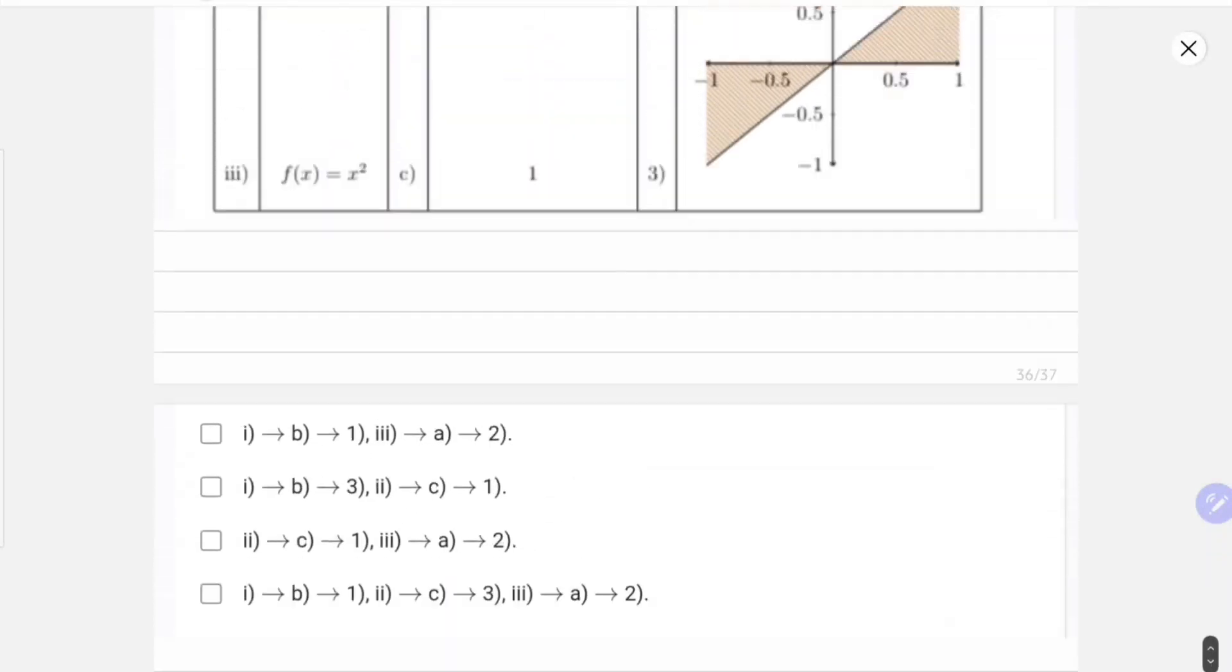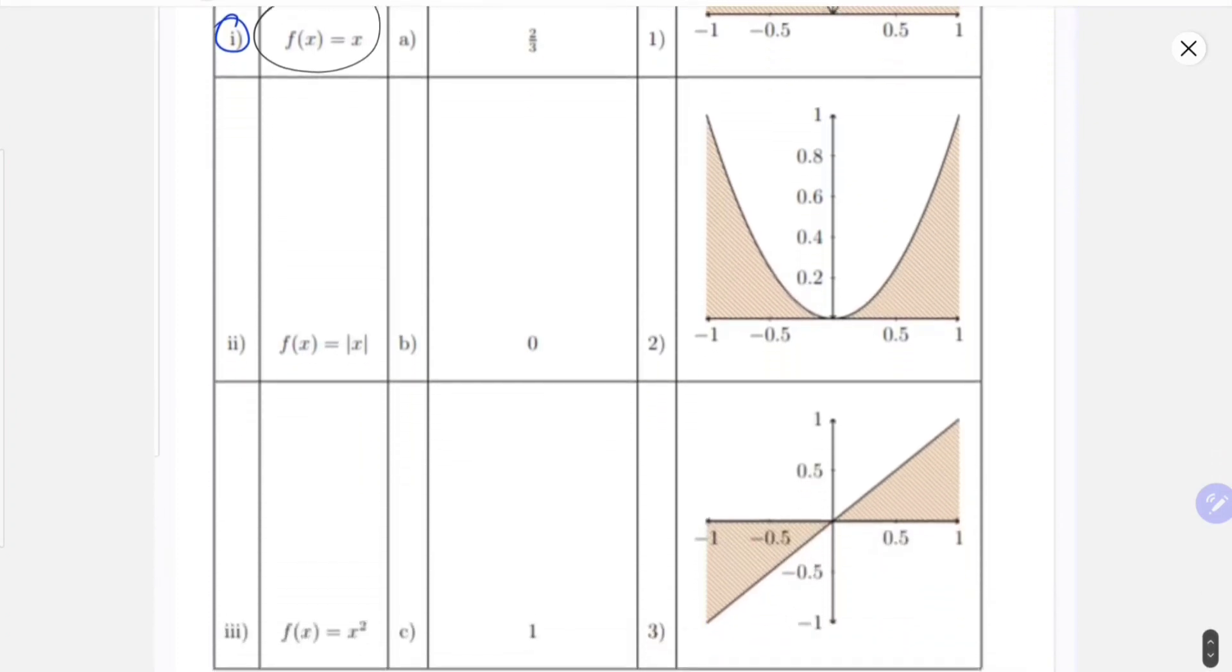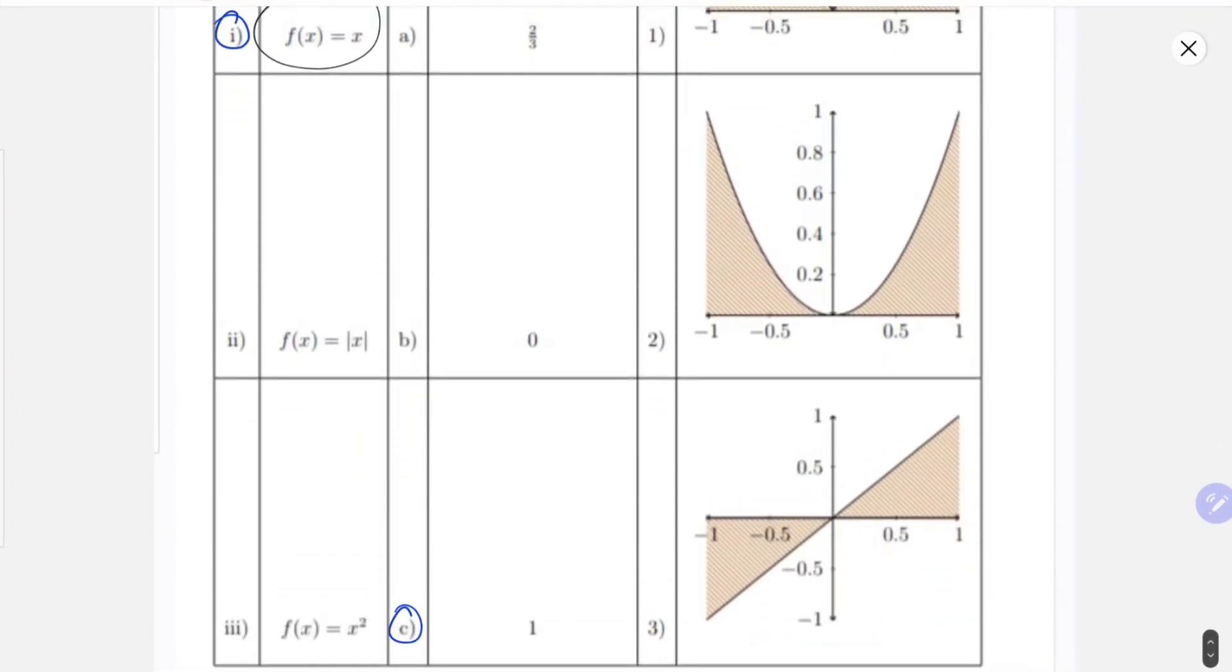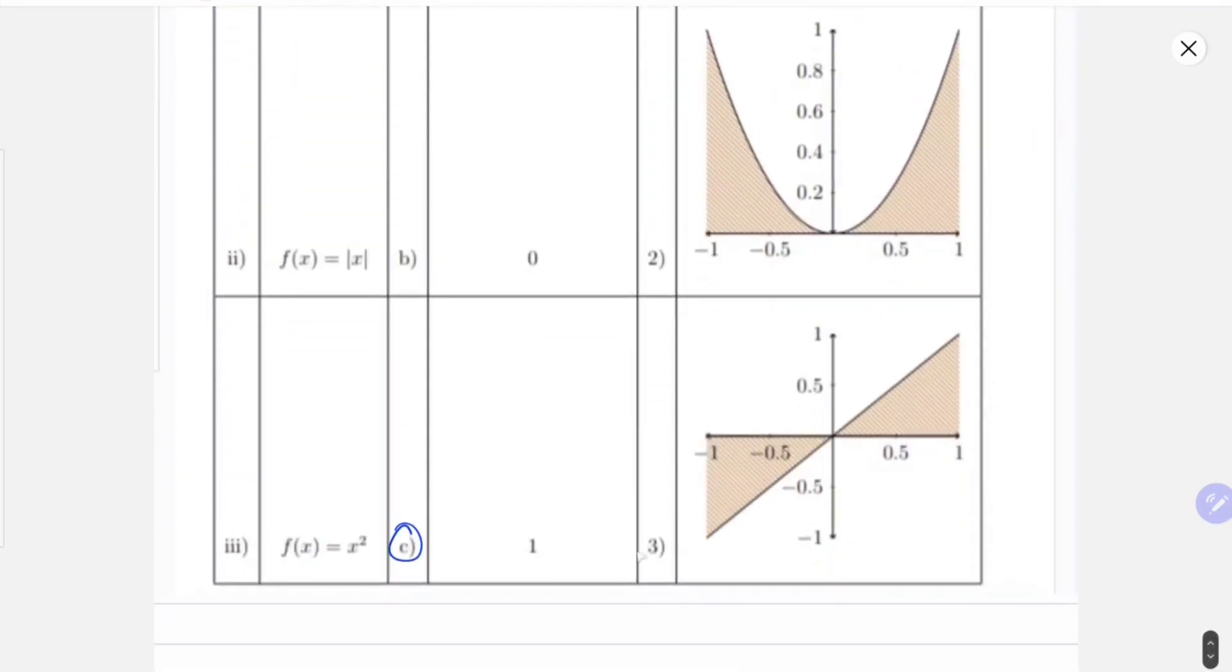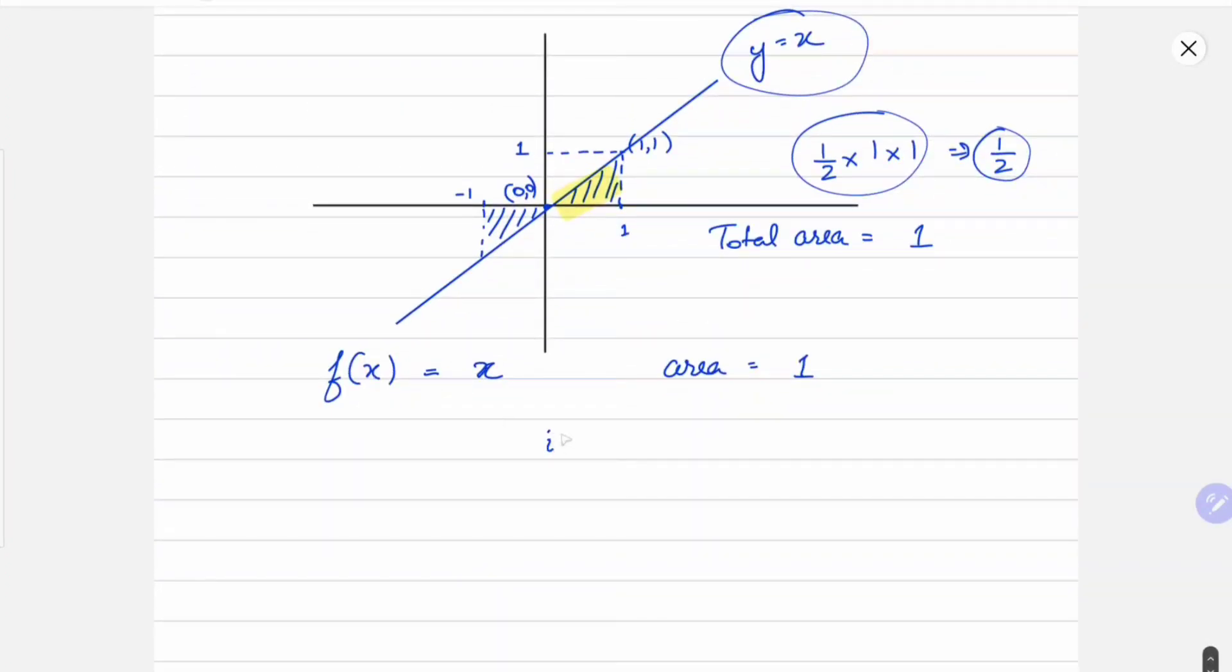So for the function f(x) equals to x, the graph is this and the area comes out to be 1. So this is 1, C, and the graph is 3. So firstly we get 1, C, 3. This is true.